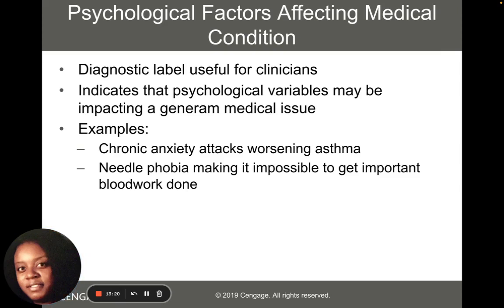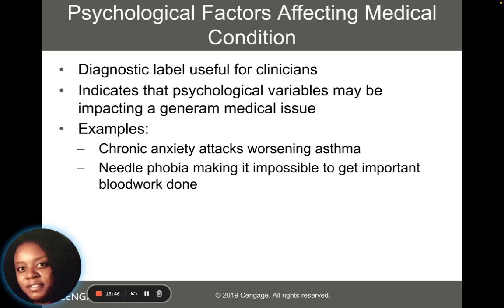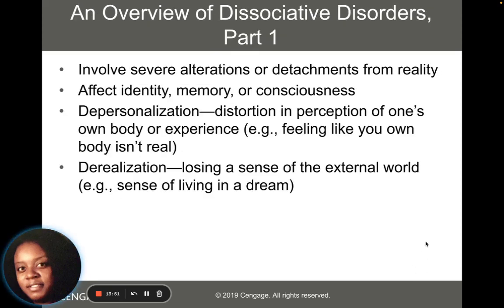There could also be psychological factors that impact medical conditions — a diagnostic label useful for clinicians indicating that psychological variables may be impacting a medical issue. For example, chronic anxiety could attack and worsen a person's asthma, and a needle phobia can make it impossible to get important blood work done. We know that having good psychological health is going to positively impact our physical health as well.